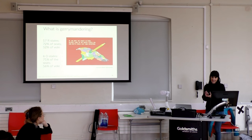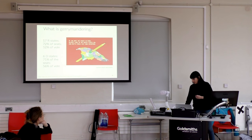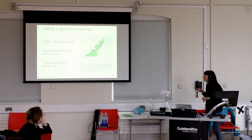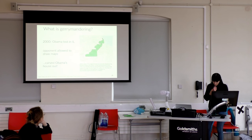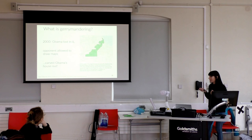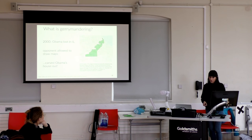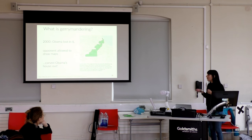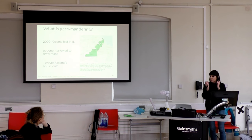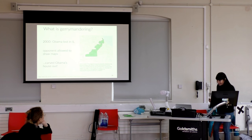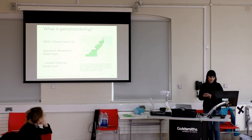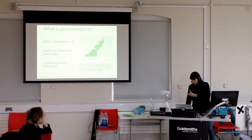They redraw their maps every ten years, so whoever is in power gets a chance to influence election outcomes in a corrupt way. A good example of how damaging this can be: Obama, in 2000, lost in Illinois, and his opponent — who won — was allowed to redraw the electoral district. He redrew it by creating a complex shape so that Obama's house wasn't in that district anymore, meaning Obama couldn't run again. Obviously Obama went on to do other things, but it's a very corrupt practice that can affect election results.